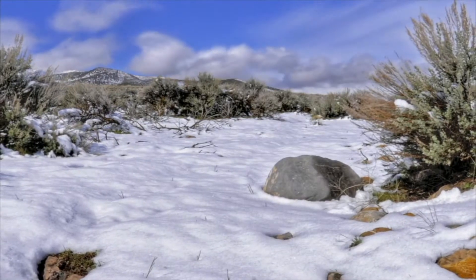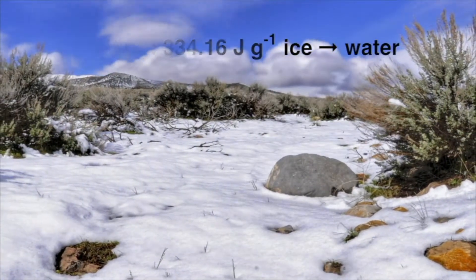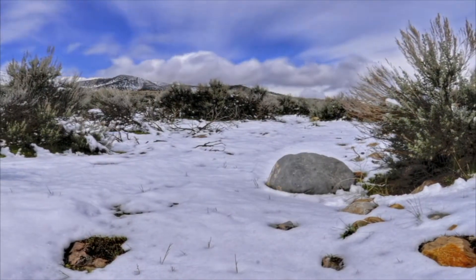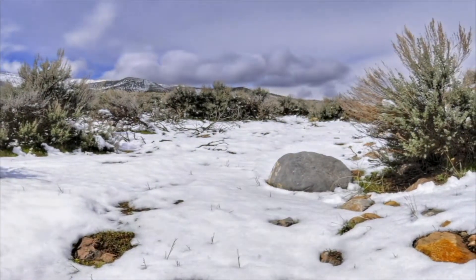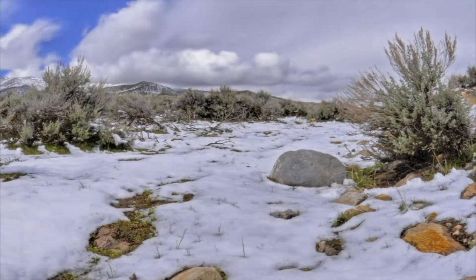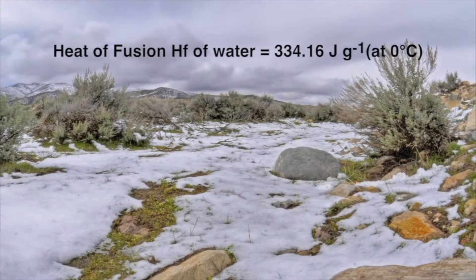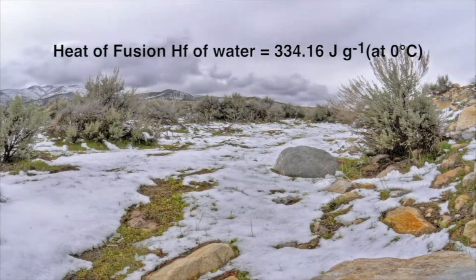For example, 334 joules are required to melt 1 gram of ice at 0 Celsius. Likewise, when water freezes to ice at 0 Celsius, the water releases 334 joules per gram. Hence, the heat of fusion of water equals 334 joules per gram at 0 Celsius.